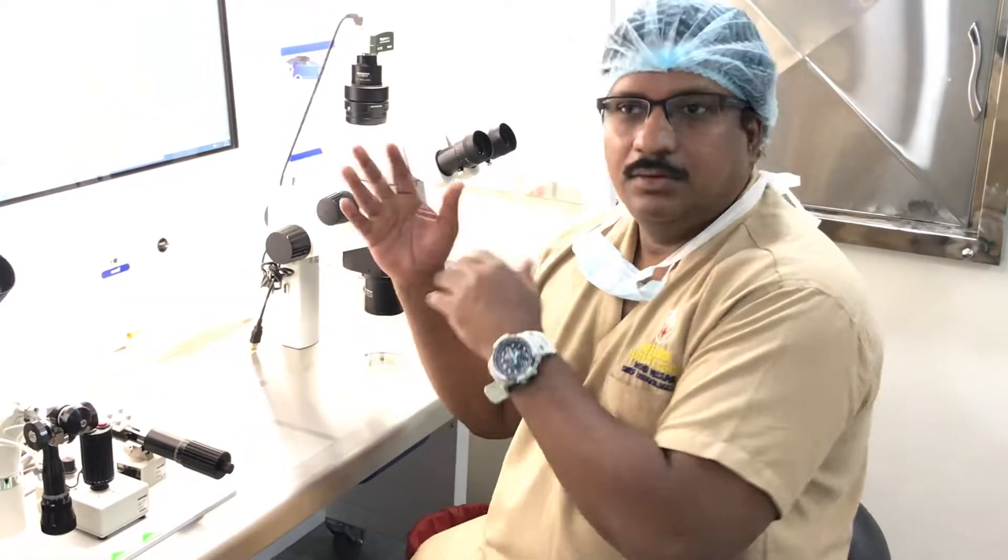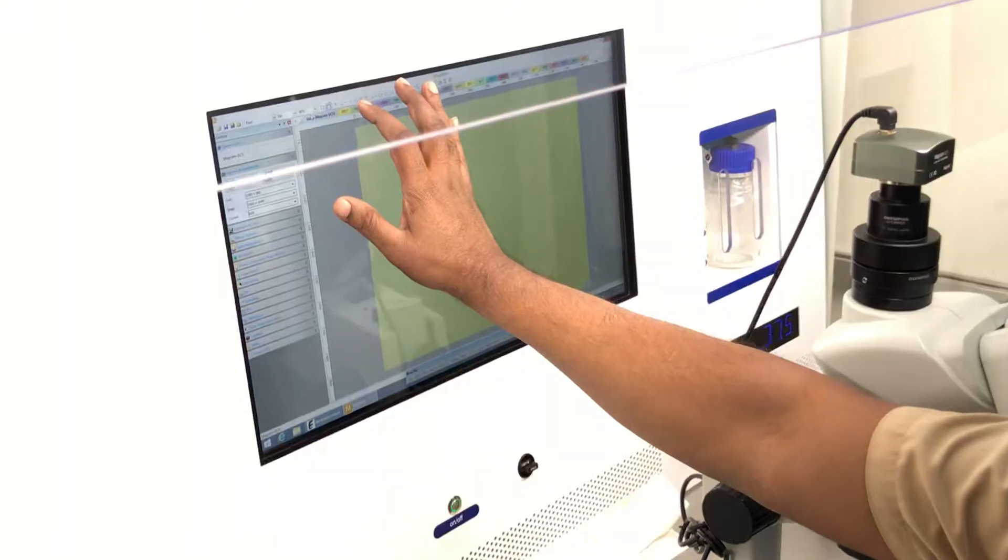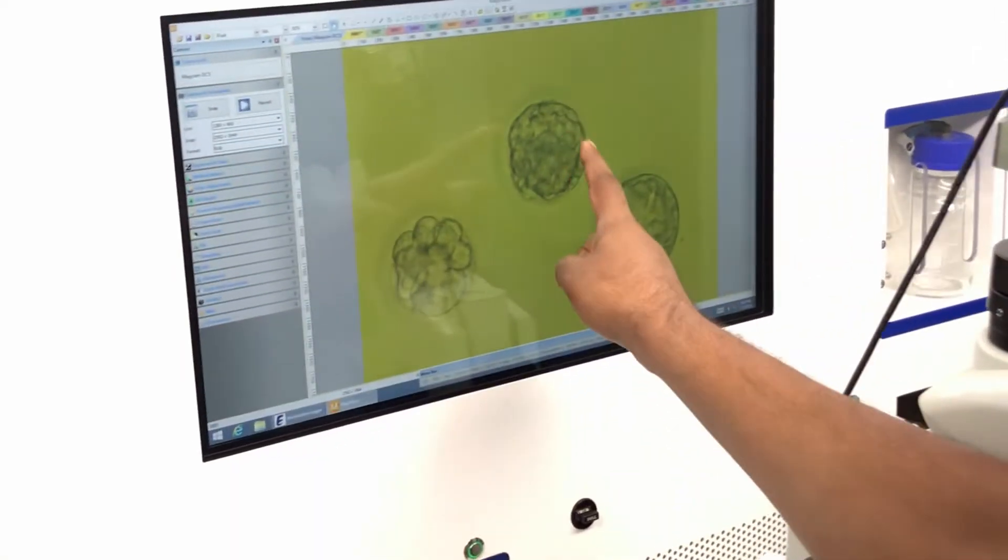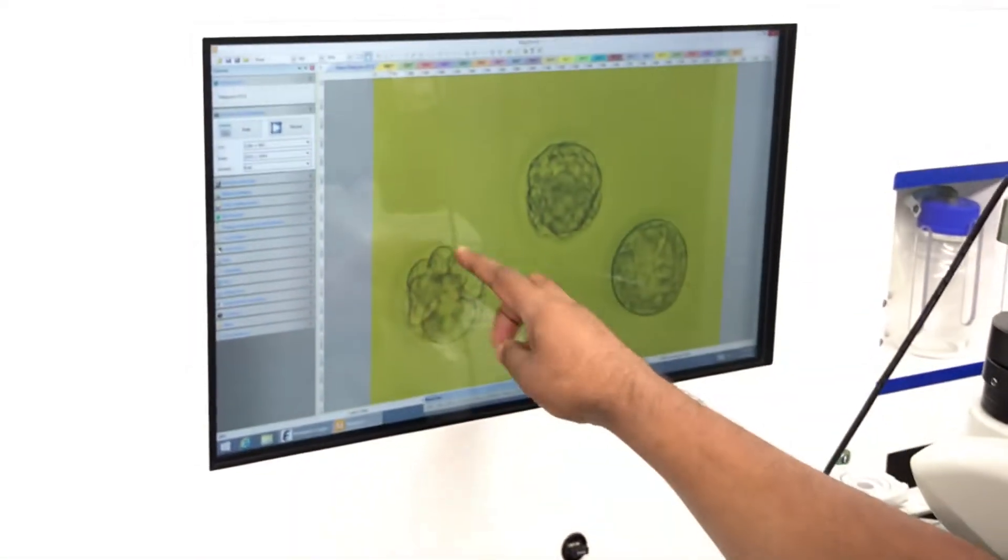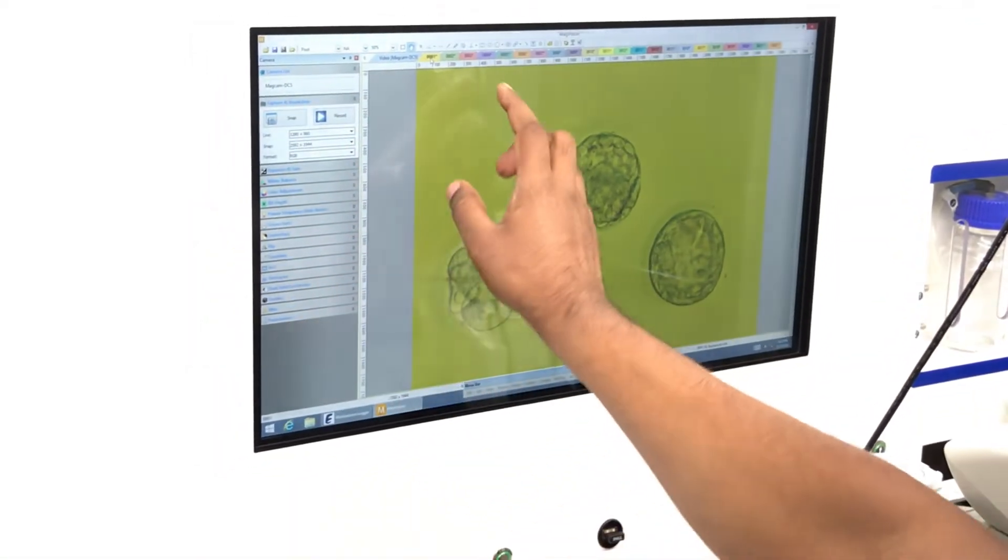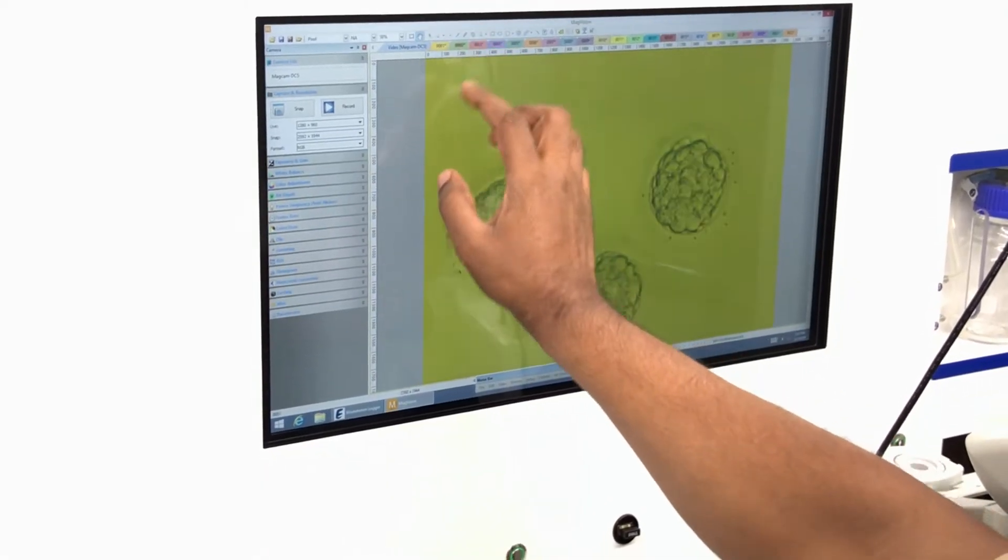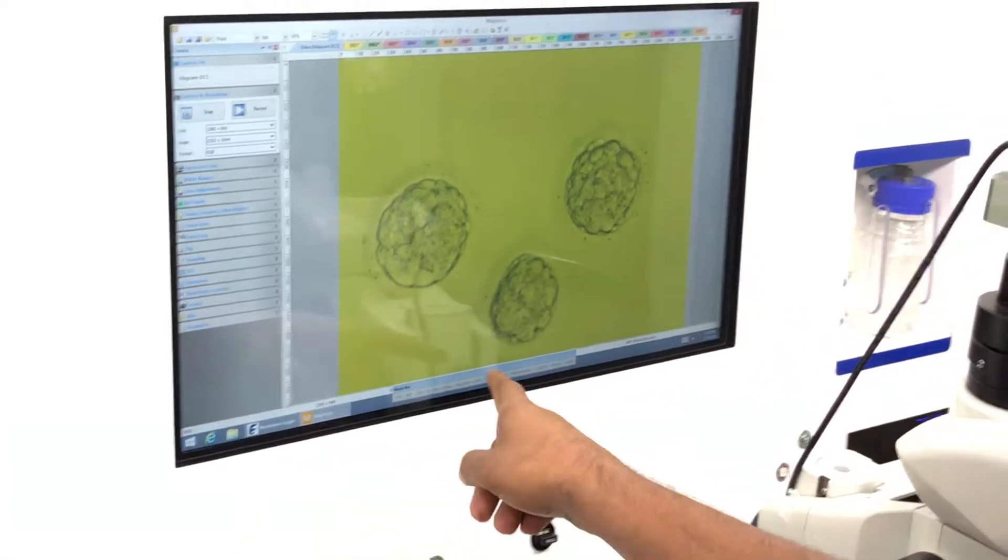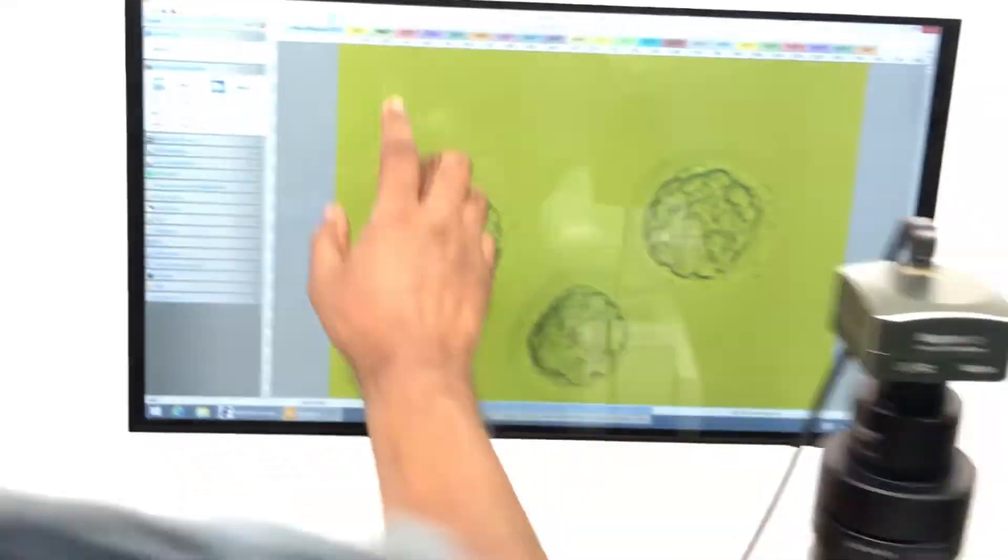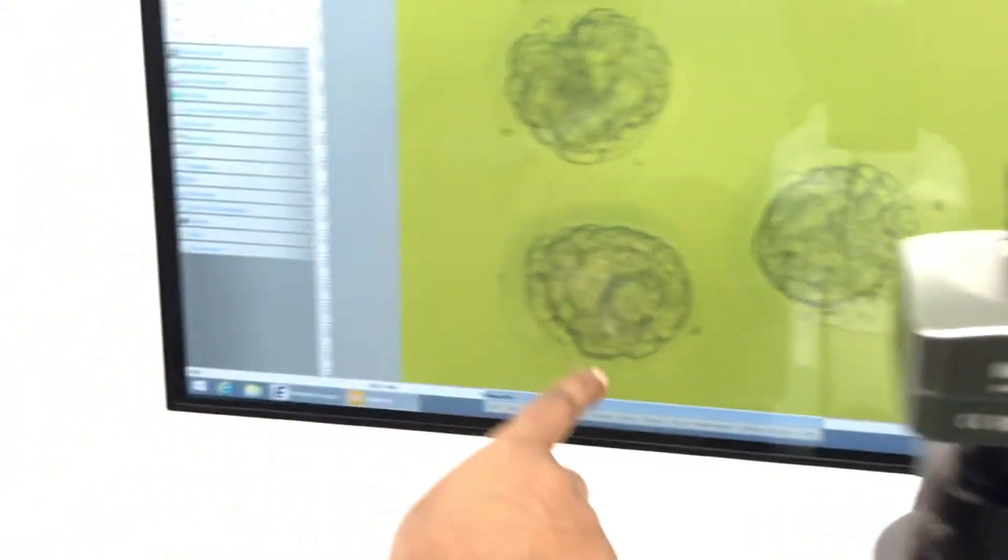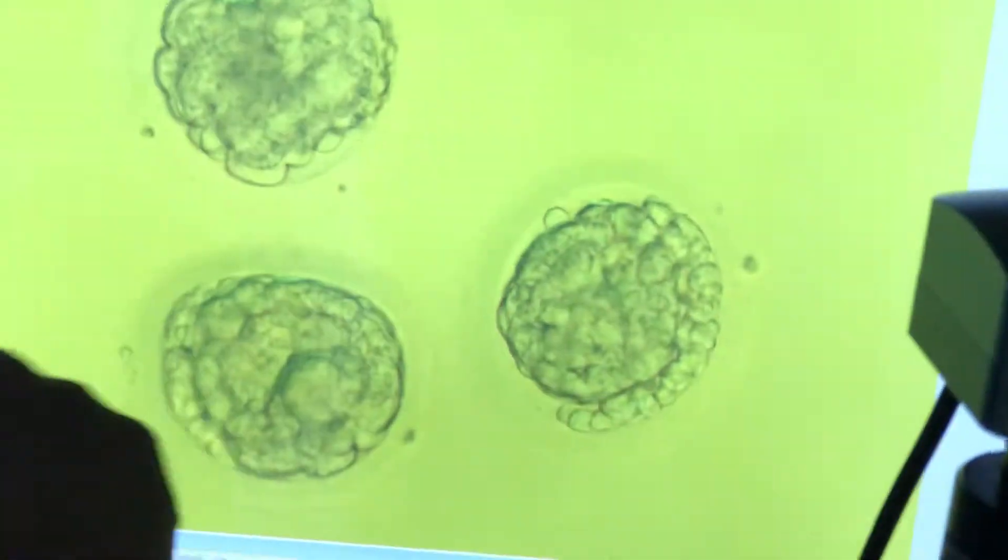Patient number one has poor compaction or arrested development. Patient number two has two beautiful expanded blastocysts and one early blastocyst.